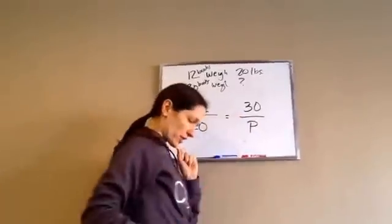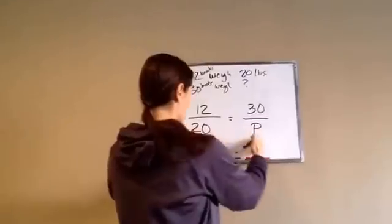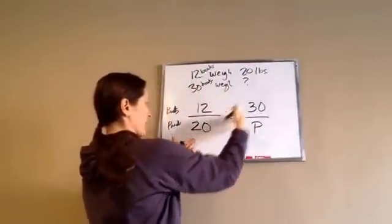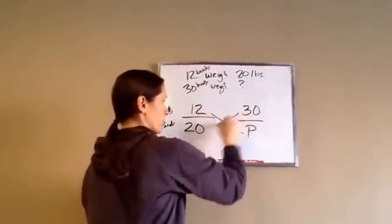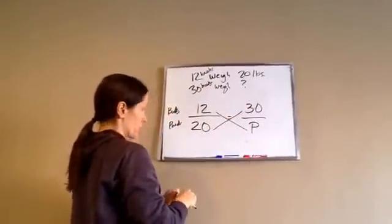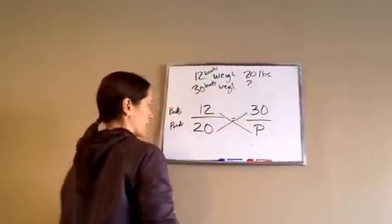And this is actually called a proportion, and so what you're going to do is you're going to go 12 books, 20 pounds, 30 books, I don't know how many pounds. So then you cross multiply. That's what you can do with proportions. Just make sure you have books, books, pounds, pounds, like that.